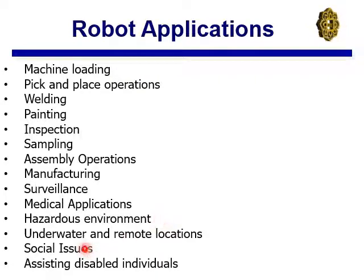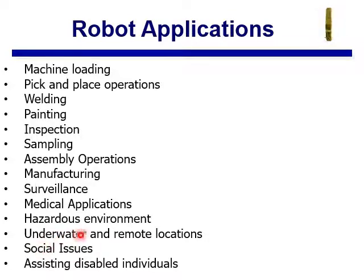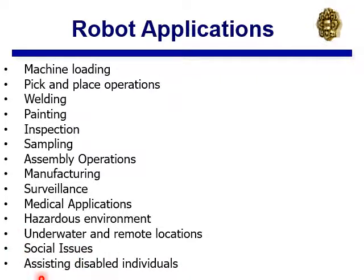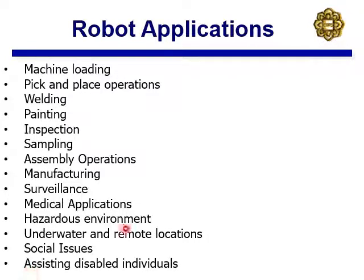Applications of industrial robots are vast: loading/unloading, pick-and-place, welding, painting, quality inspection, sampling, assembly, manufacturing, surveillance, and medical applications. Field robots are used in hazardous environments, underwater, and remote locations. Social robots like Sophia are another example, as are rehabilitation robots to help disabled people.